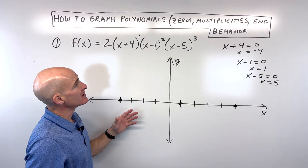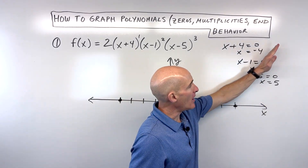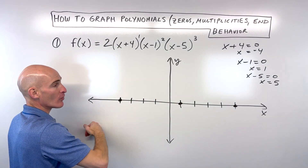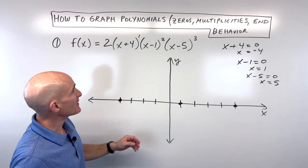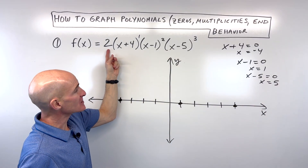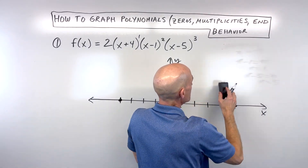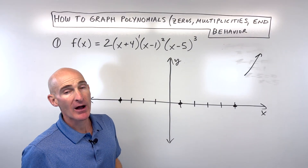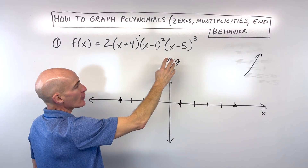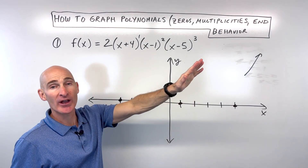And then lastly, if we set x minus 5 equal to zero and add 5 to both sides, x is equal to 5, so that's going to be right here on the x-axis. Now before we get into the multiplicities, let's talk about the end behavior. The end behavior tells us when you go to the right end of the graph, is it going up towards positive infinity or down towards negative infinity? The leading coefficient tells us about the right end behavior. Because it's positive, this graph is going to go up towards positive infinity.